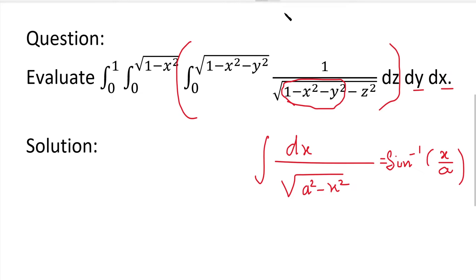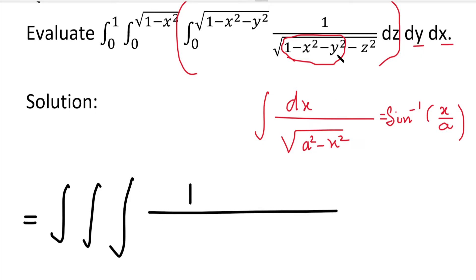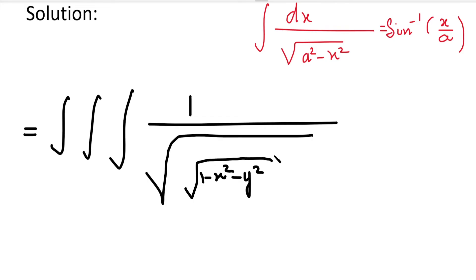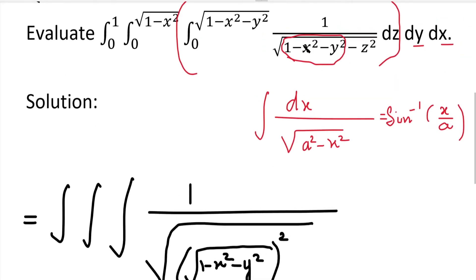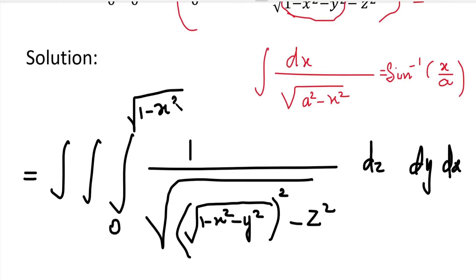So, adjusting the denominator, the given integration is equivalent to the triple integral of 1 divided by root of [(1 minus x square minus y square) minus z square] dz dy dx, where z limit is 0 to root of (1 minus x square minus y square), dy with y limit 0 to root of (1 minus x square), and dx with x limit 0 to 1.